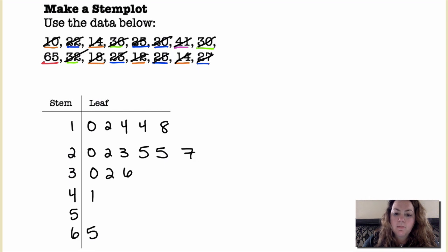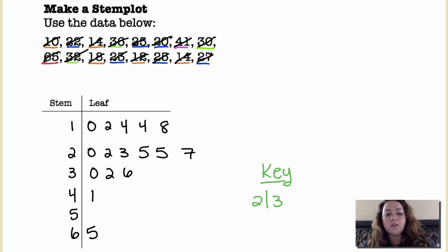Now anytime you make a stem plot or a stem and leaf plot you always have to make a key. And so your key kind of tells you like if I have 2 on the one side of the t-chart and a 3 on the other side of that t-chart then those come together to make the number 23. And you would put the units if you knew what this was measuring, so 23 feet, 23 whatever it is that it's measuring.